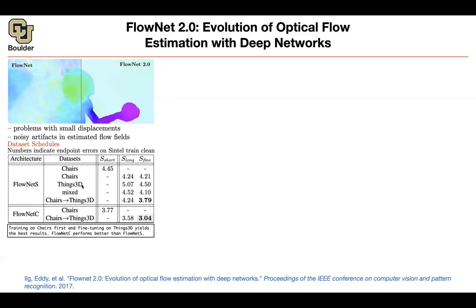There is another dataset. It's a 3D version of chairs. You can train on that for longer or even fine-tuned. You don't get much improvement. You can mix those two datasets together. You get some improvement. But the best one is the case that you first train on chair for a long time and then fine-tune on the things 3D data. And that's giving you the best.